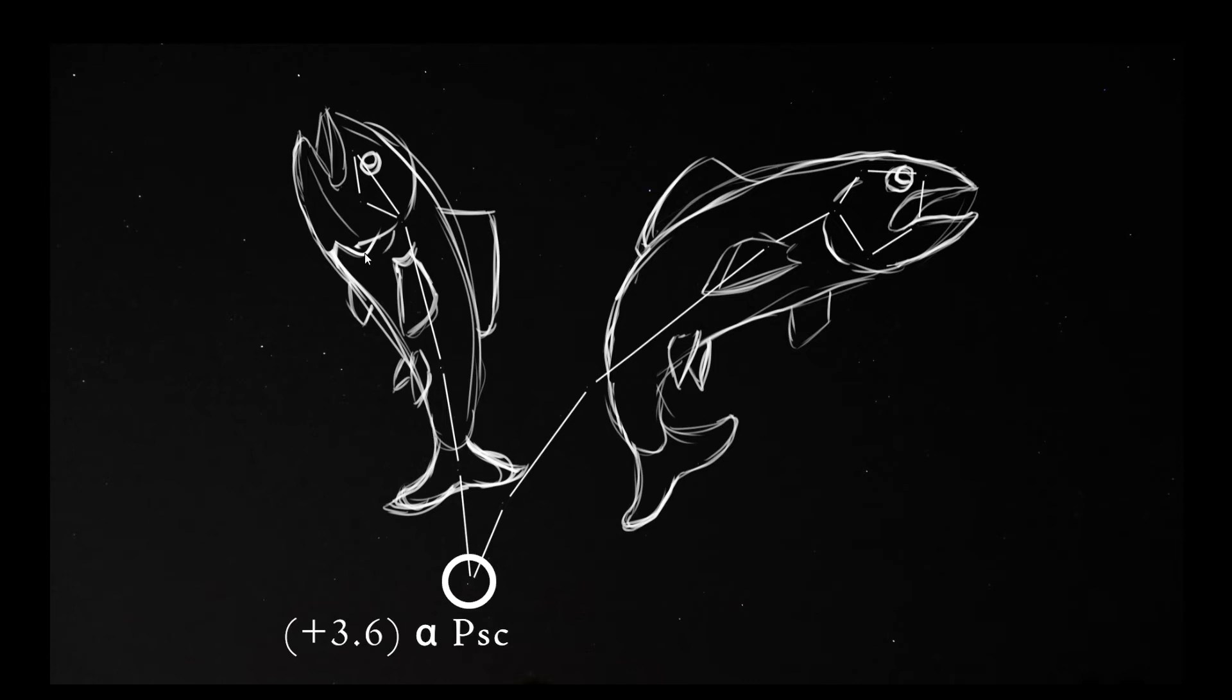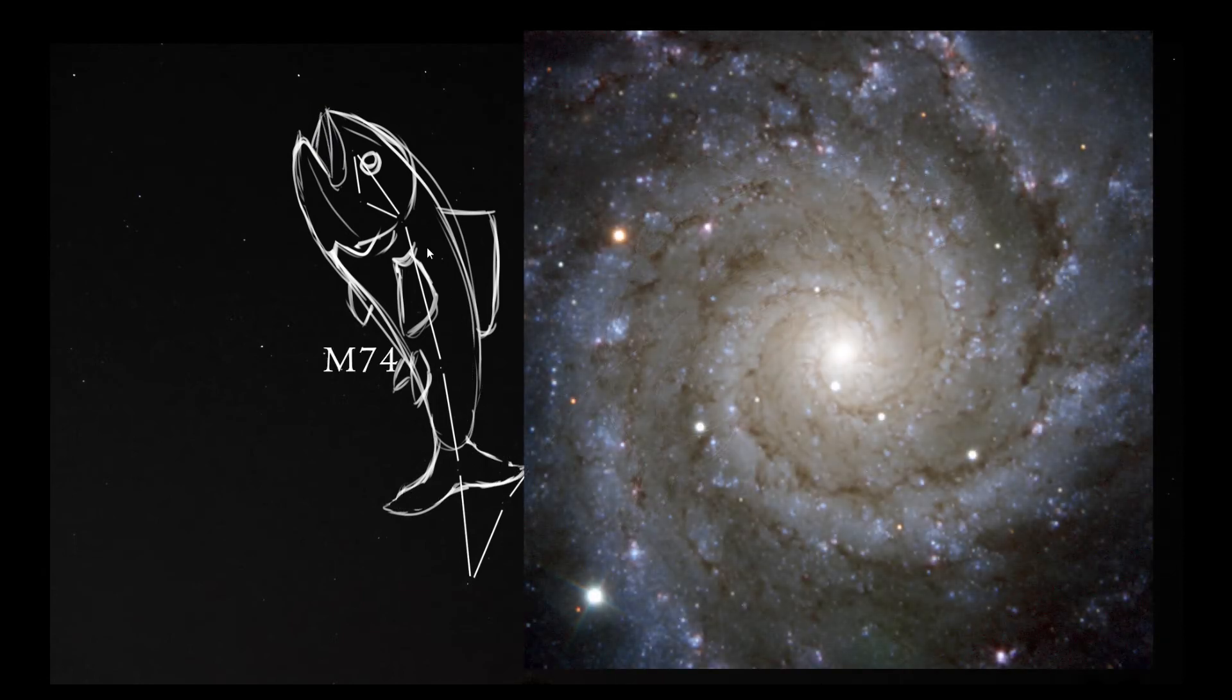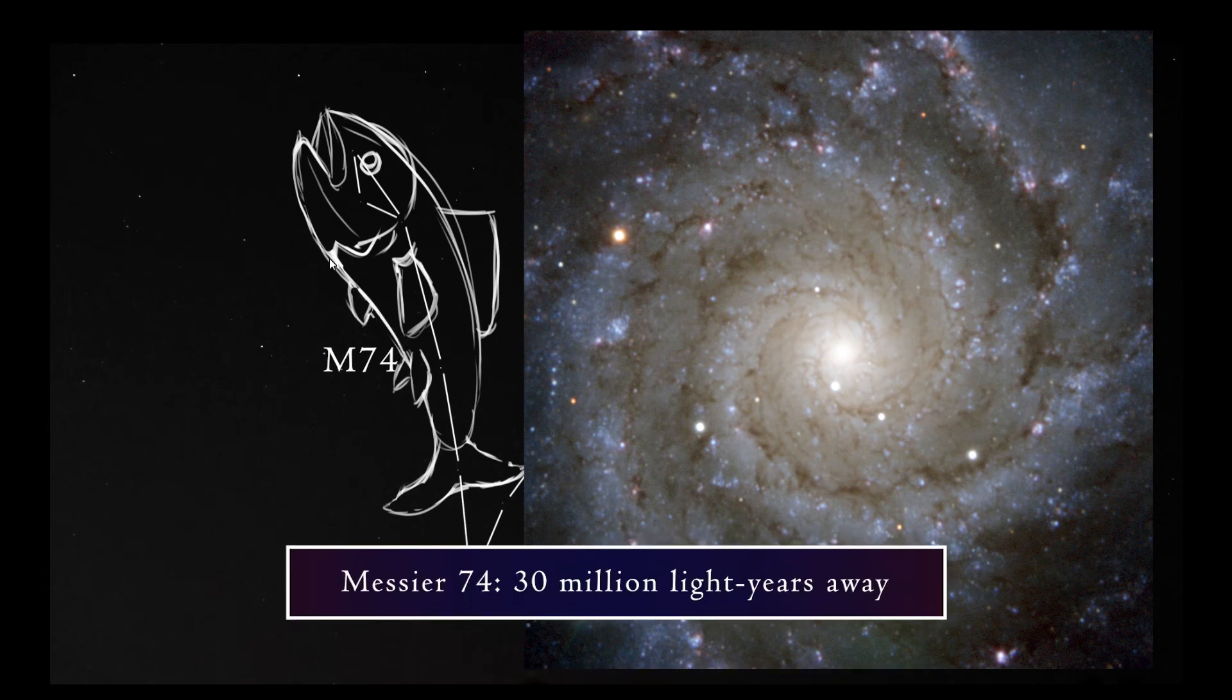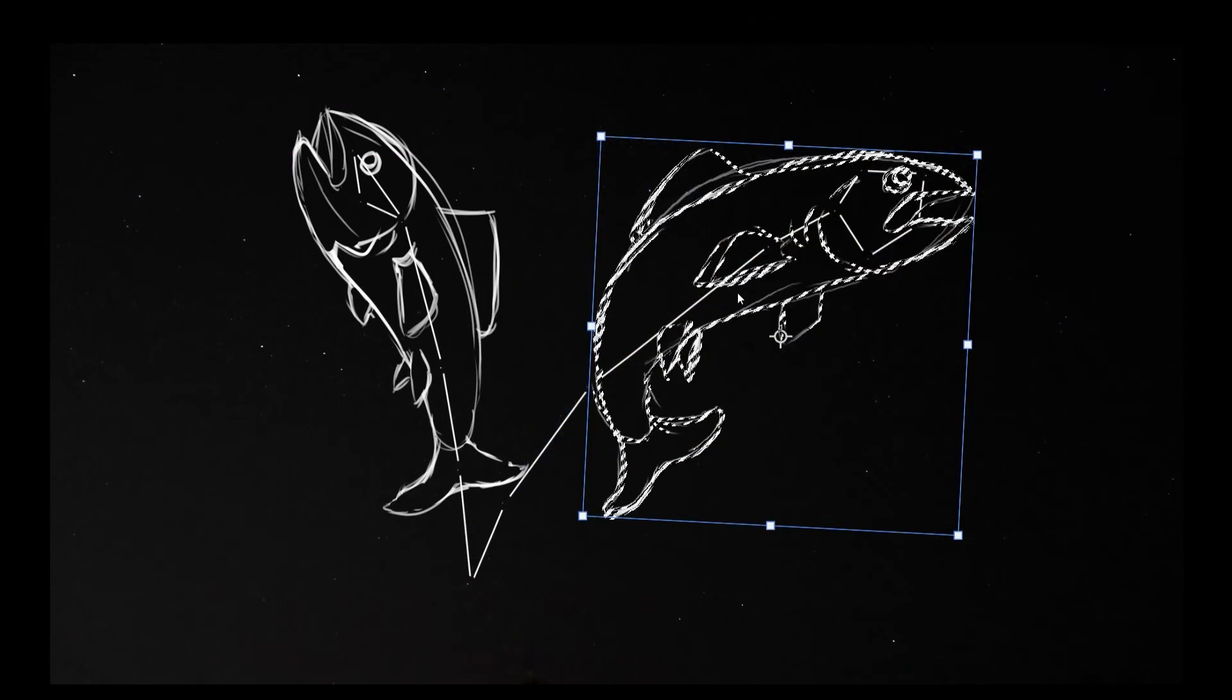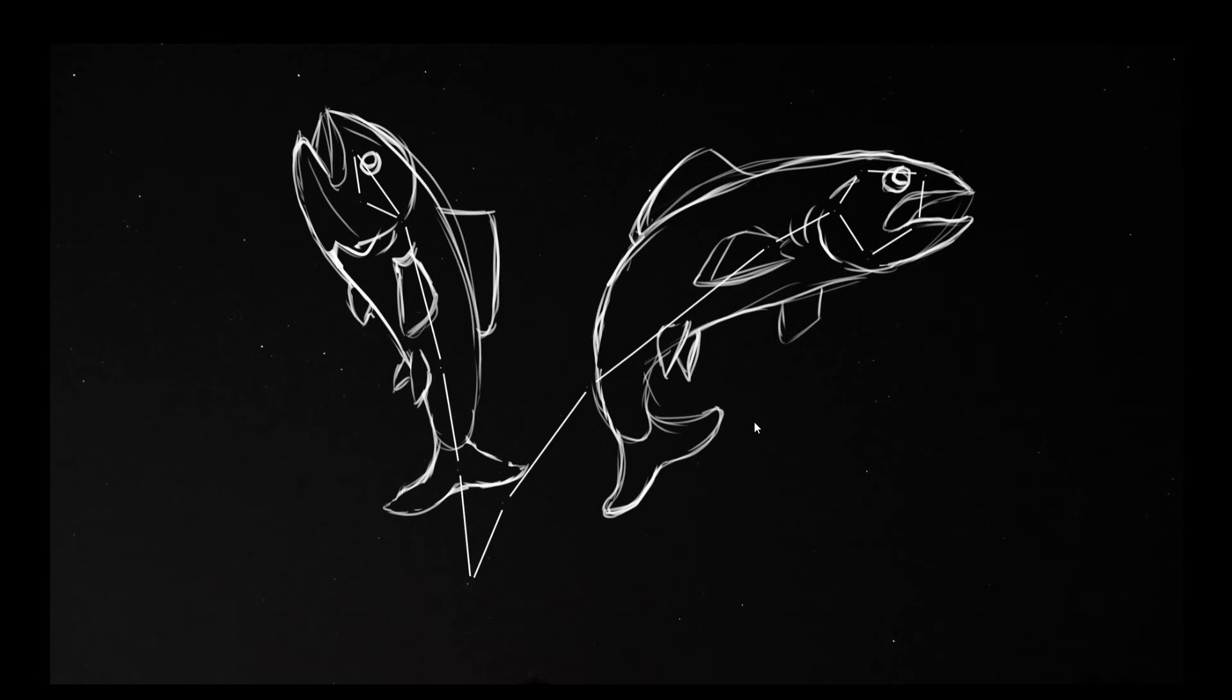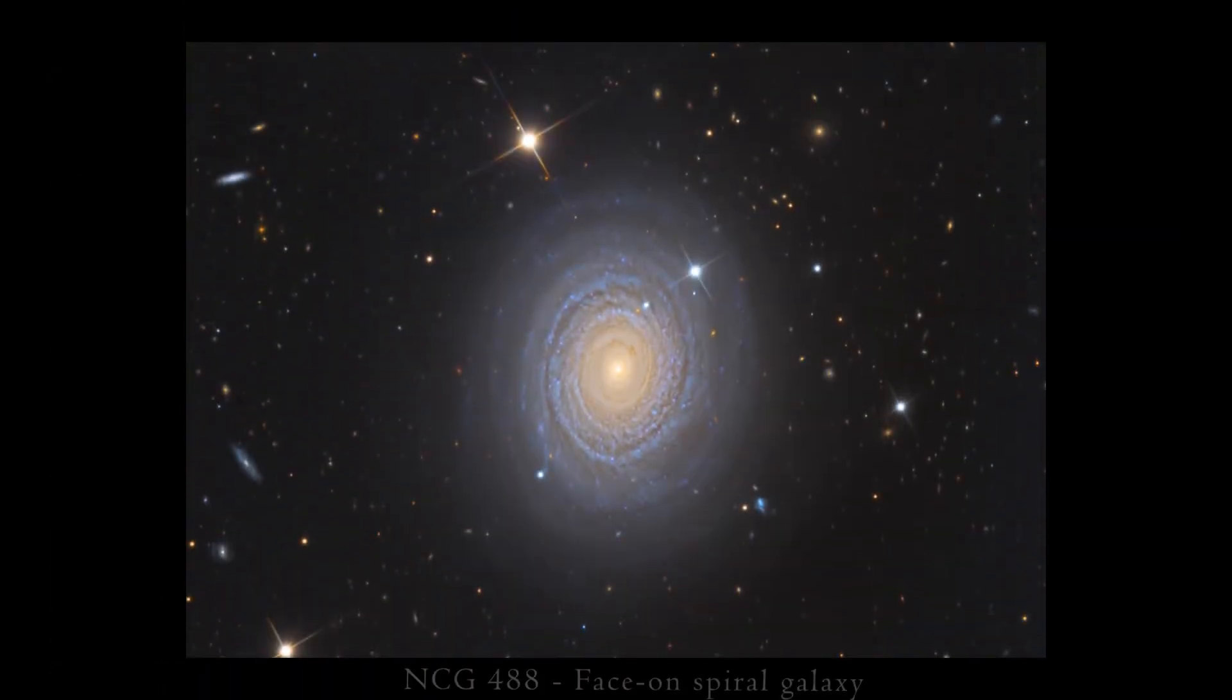As far as specific celestial objects to look for, Pisces contains just one Messier object, M74, which is a loosely wound spiral galaxy. It is about 30 million light years away and it has had a couple known supernova take place in it within the last two decades. There is another spiral galaxy located in Pisces, but it's not in the Messier catalog. It's called NGC 488. NASA took a photo of it that I think is pretty cool, so check this out.